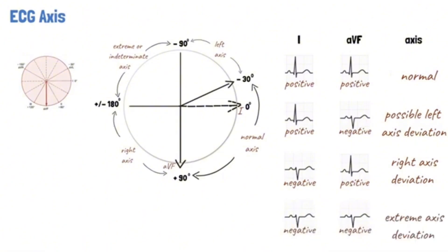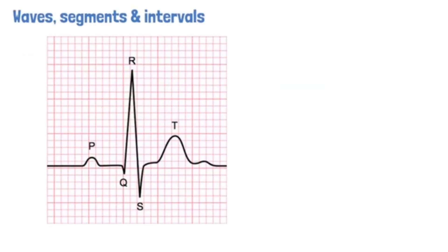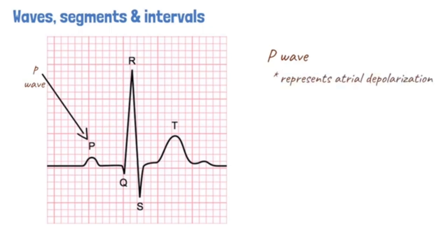After calculating the rate, rhythm, and axis, the next step in ECG interpretation should be the evaluation of the waves. The P wave is the first positive deflection on the ECG. It is a small, smooth-contoured wave and represents atrial depolarization. Atrial repolarization is not usually visible as the amplitude is too small.